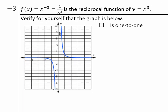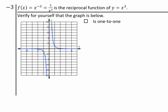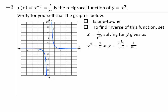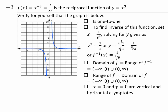The original x cubed graph was one-to-one, and so is the reciprocal function. To find the inverse, we interchange x and y and then solve for y. To undo cubes, you take the cube root, so 1 over the cube root of x is going to be the inverse of this function. The domain is broken at zero: negative infinity to zero and zero to infinity. The range would also be negative infinity to zero and zero to infinity, since we can't attain zero as a function value. And x equals zero and y equals zero are again your vertical and horizontal asymptotes.